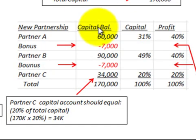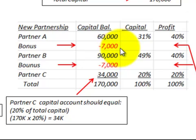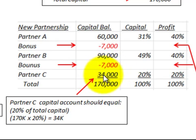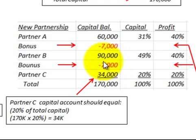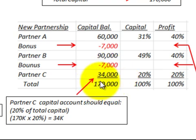Looking at our chart for the new partnership: partner A had an existing capital balance of $60,000. This bonus reduces their capital account — the $60,000 minus the $7,000 gives them $53,000. Partner B had a capital balance of $90,000, and they would pay a $7,000 bonus to partner C, reducing their account from $90,000 to $83,000. Partner C gets $34,000, for a total capital balance of $170,000.